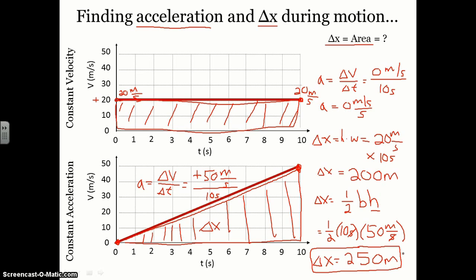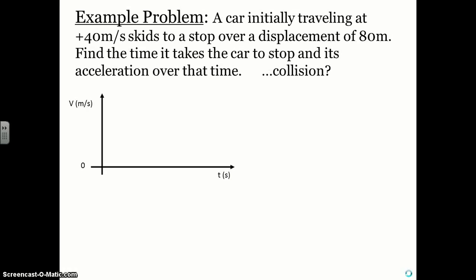Even when velocity is changing, we can find acceleration and displacement fairly easily — acceleration by finding the slope of the line, and displacement by finding the area under the curve. Let's see how we can use this to solve a more complicated problem.